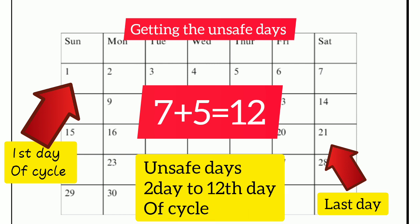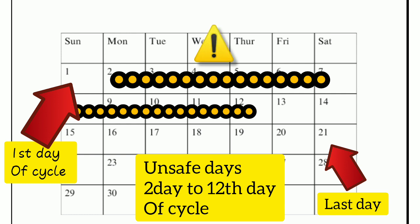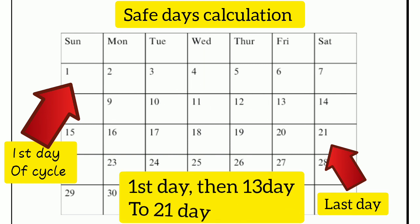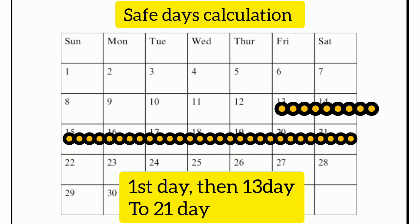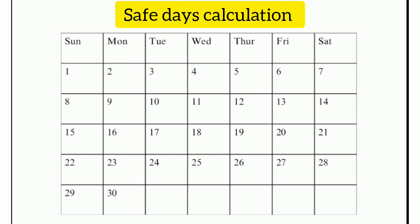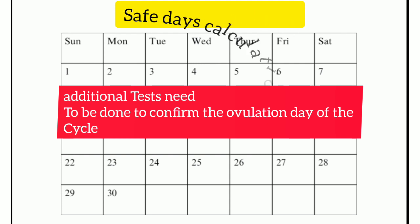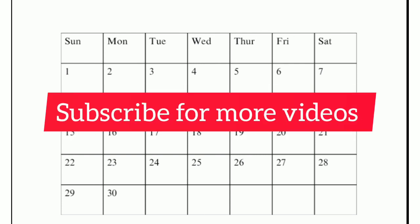From around the 2nd day to the 12th day, you're likely to be unsafe. That means from day 1 up to day 2, the safe day is only day 1. Then from the 13th day up to the 21st day of the cycle, that is when you're going to be very safe to avoid pregnancy. Remember, this method is usually an estimate — you may need to consider other means and do more tests to confirm the ovulation date so that you can avoid pregnancy.